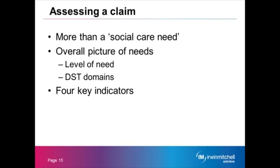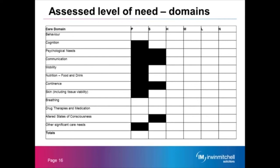In terms of assessing a claim for CHC funding, the presenting needs would need to be more than social care needs. The assessment is based on the overall picture of needs rather than a particular medical condition. On screen you should be able to see the domains with letters across the top: P, S, H, M, L, N. These letters refer to the severity of the level of need — P is priority, S is severe, H is high, M is moderate, L is low, and N stands for no need.